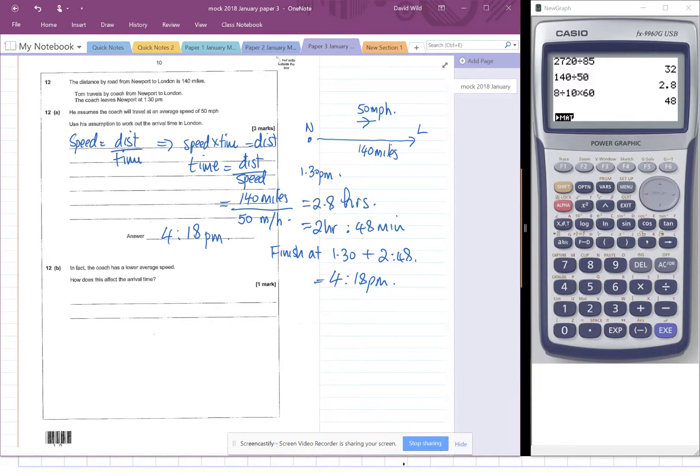So 4:18 p.m. 12b. In fact, the coach was at a lower average speed. How does it affect the arrival time? The arrival time. So if it's going not as fast, its arrival time will obviously be later. So we can write arrival time will be later. Notice that the question asks you for the arrival time, not the amount of time it takes there, but the arrival time. So we're looking for later, not longer. Even though it will take longer, that's not what we're asked for. We're asked for how will it affect the arrival time. So be careful there.